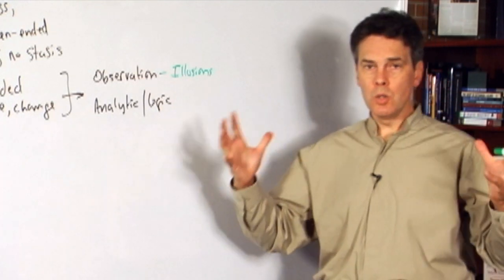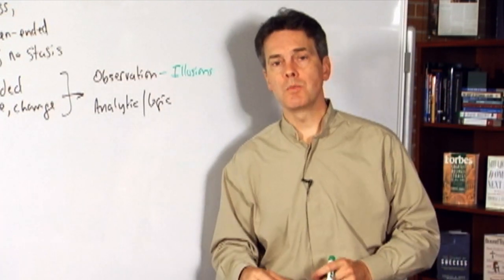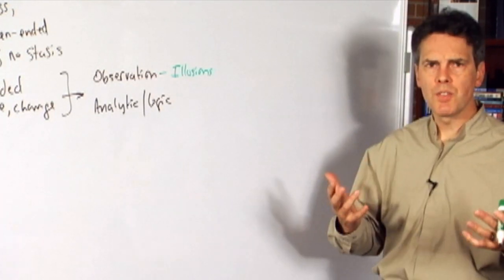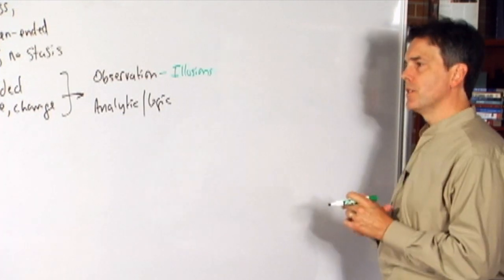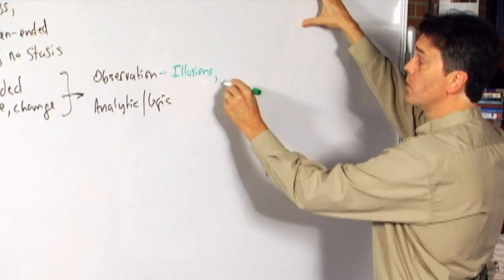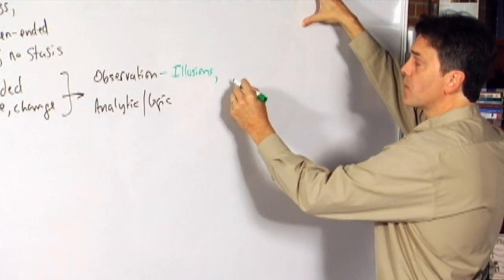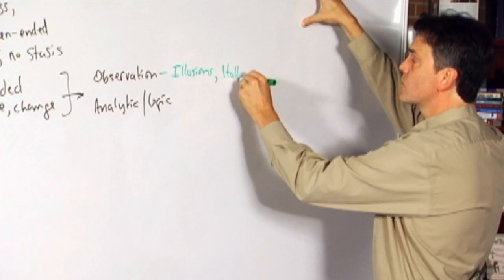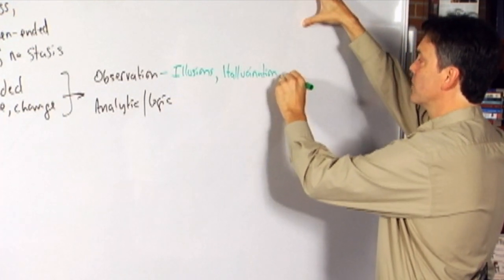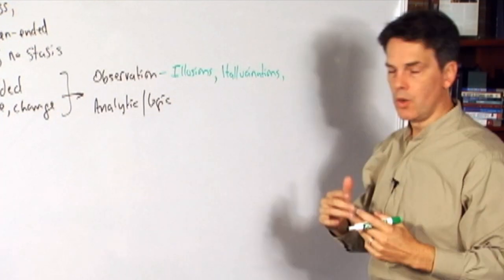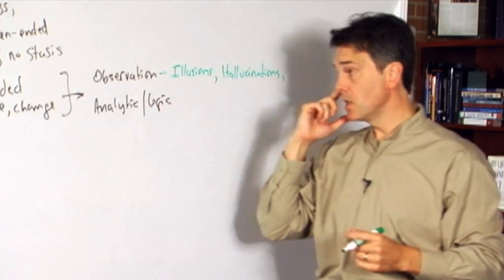Sometimes the moon seems huge in the sky, other times the moon seems rather small. What's the right size of the moon as it appears to our eyes? Well, it's hard to tell in those particular cases. We also know that our observations can be subject to various sorts of hallucinations, for example. If we take various sorts of drugs or chemicals, they can alter the way our observational capacities operate.